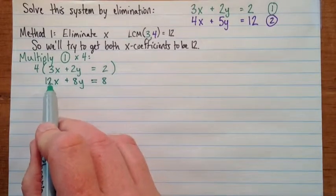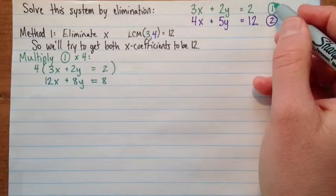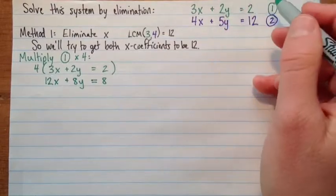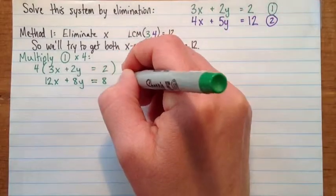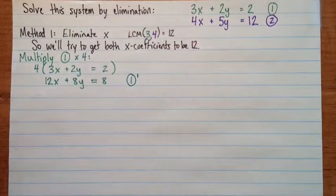Okay, so we've got our 12x here. This is going to be an equation we'll use. But because it's basically equation 1, we didn't really get anything new, we just multiplied both sides by 4. And we're going to call that 1 prime.